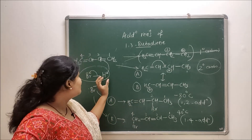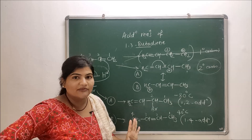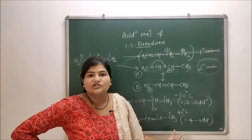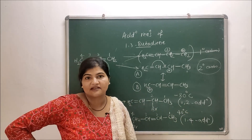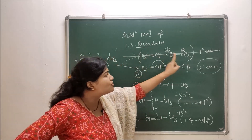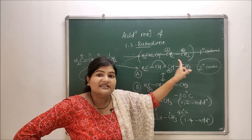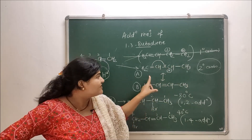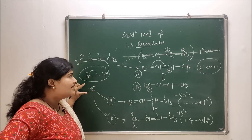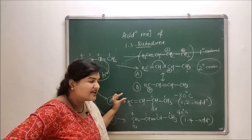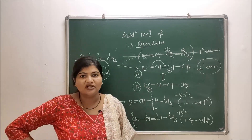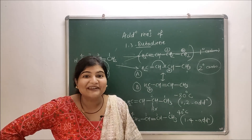To summarize: addition of HBr to 1,3-butadiene gives a mixture of products by two processes — 1,2-addition and 1,4-addition. In the mechanism, protonation of 1,3-butadiene forms a more stable secondary carbocation, which is resonance stabilized into two canonical forms A and B. Bromide ion reacting with A gives the 1,2-addition product; reacting with B gives the 1,4-addition product. I hope you understood — see you in the next video!